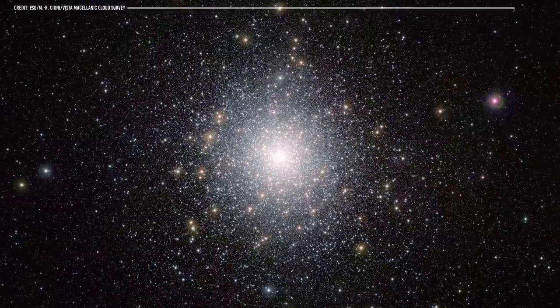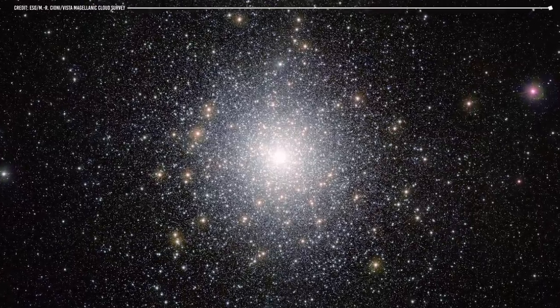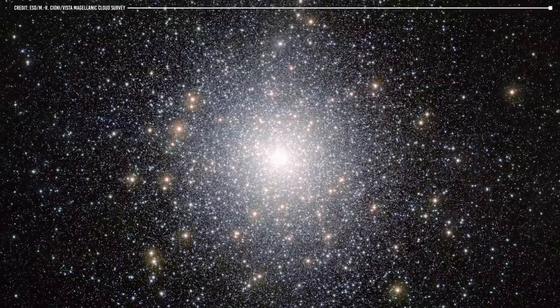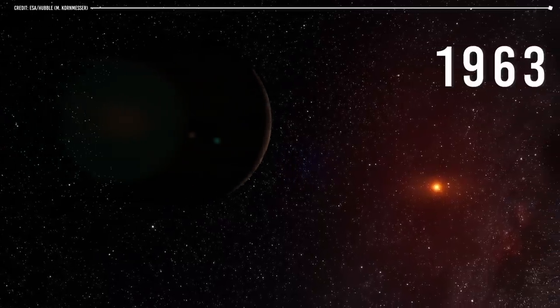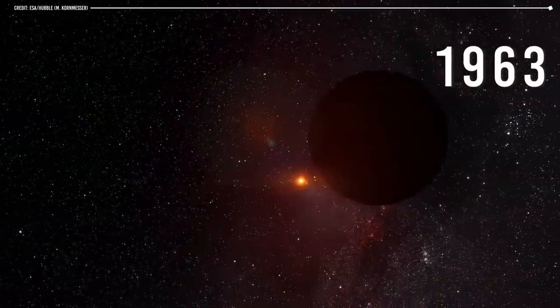In the decades following Barnard's discovery, astronomers continued to study this star and gather more information about its properties. In 1963, it was discovered that Barnard's star had a relatively large proper motion, which made it a prime target for studying the effects of stellar parallax.